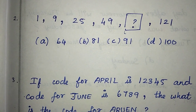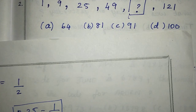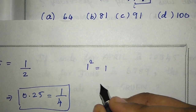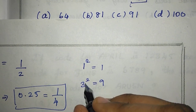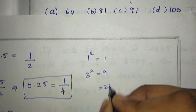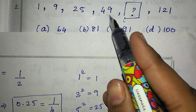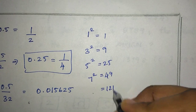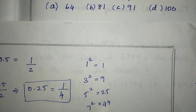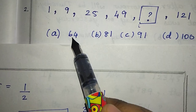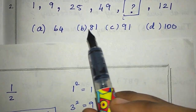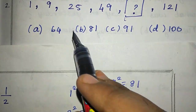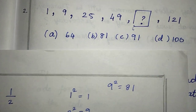If we solve this, we have 1, 9, 25 and this is the right answer. We have 1 squared, 7 squared, so we have 121. Then we have 121 and this is the right answer. Option B: 81.